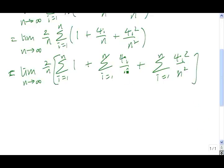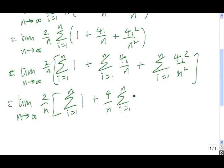And the next thing we're going to do is we're going to take these constants and pull them in front of their individual sigmas. So we have 4 over n times the sum as i goes from 1 to n of i plus 4 over n squared times the sum as i goes from 1 to n of i squared.